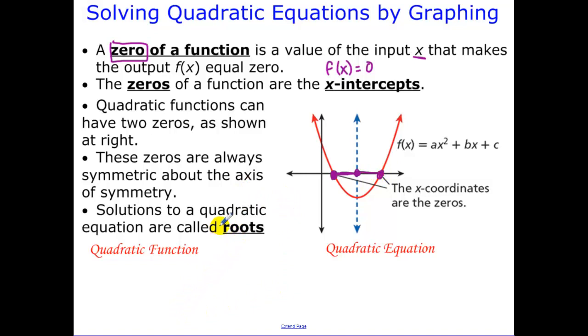The solutions to the quadratic equation are called roots. So really, x-intercepts, zeros, and roots are essentially all the same thing. Just remember that a quadratic function is a function where we have f of x equals something, versus a quadratic equation where we don't have that y or that f of x.